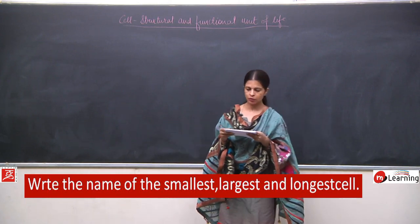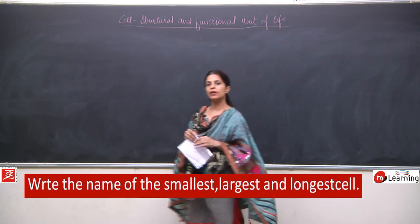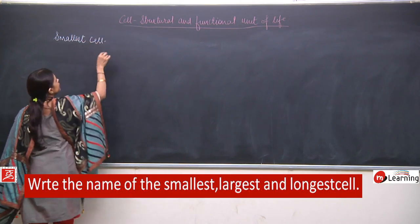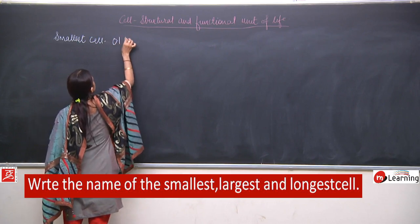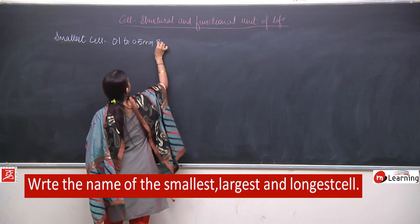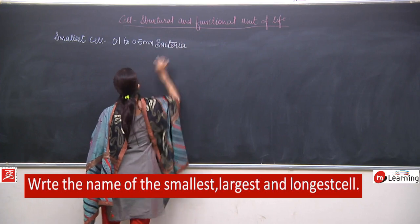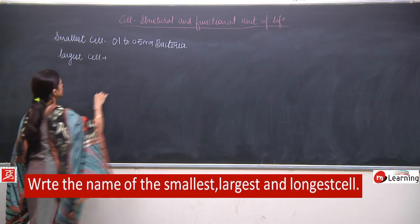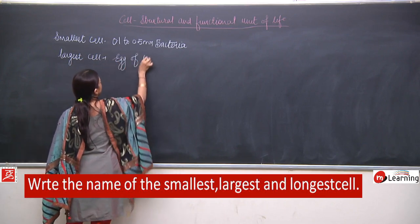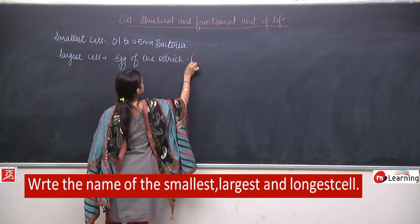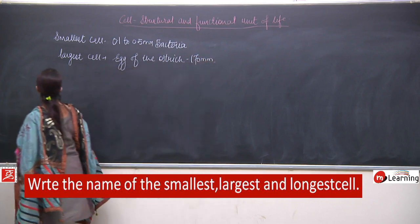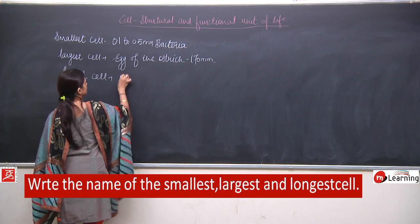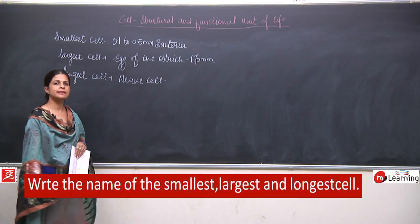Question number 5 answer: The smallest cell is the bacterial cell — bacteria, 0.2 to 0.5 micrometers. If we talk about the largest cell, it is the egg of the ostrich. And the longest cell is the nerve cell.